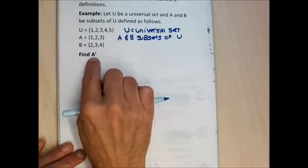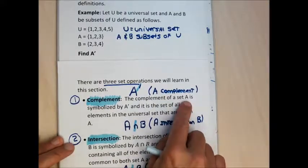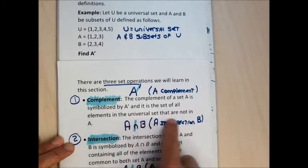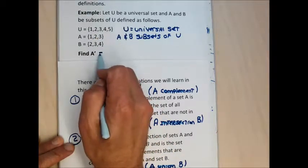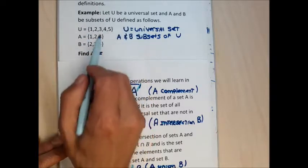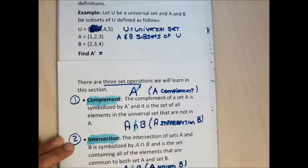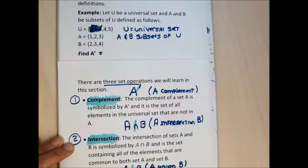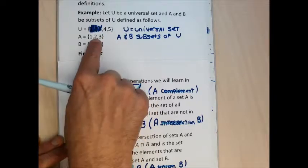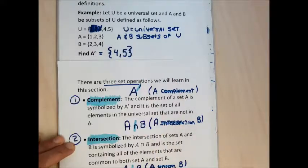The first thing I ask is to find the complement of A. The complement of set A is all the elements in the universal set that aren't in A. Set A has the numbers 1, 2, and 3. To find A complement, I go to the universal set and cross out any elements that are in A. What's left — 4 and 5 — are the elements of the universal set that aren't in A, so A complement is the set containing 4 and 5.